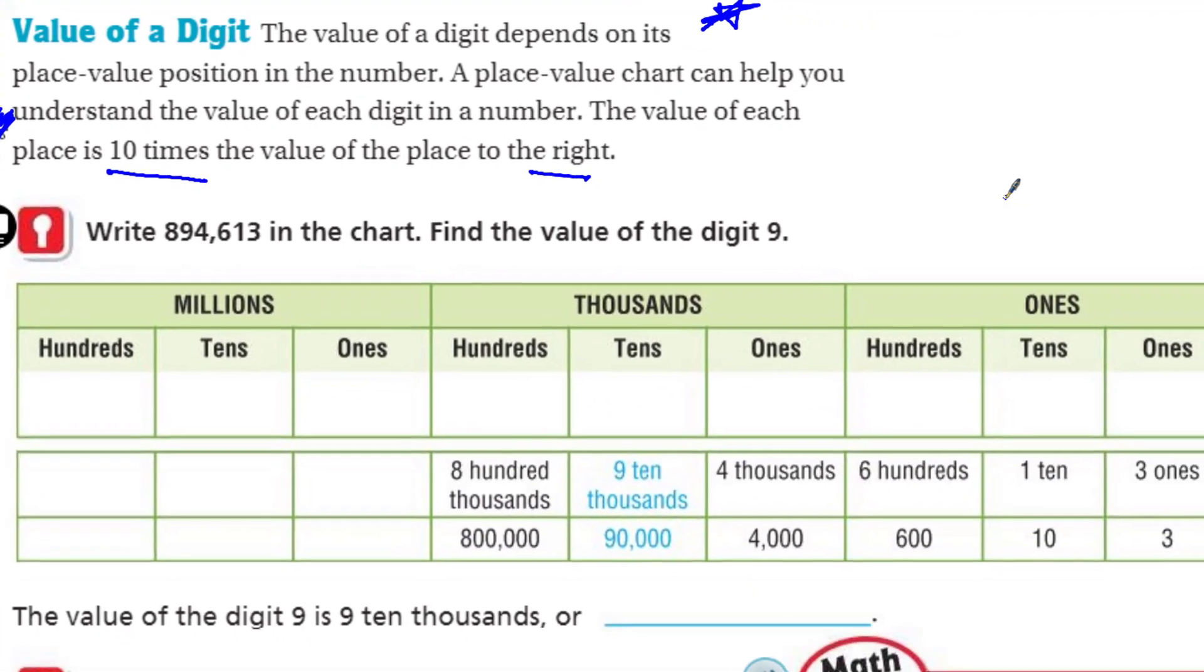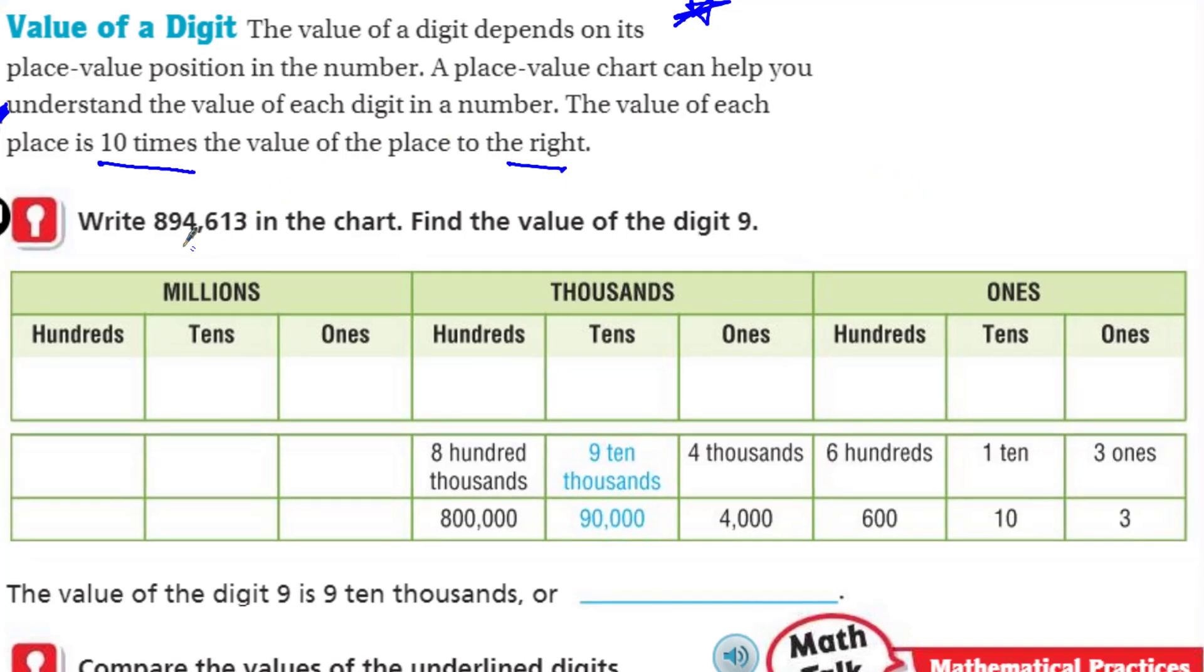Let's write that number. The ones is going to be a three, the tens is going to be a one, the hundreds is a six. Four in the thousands, nine because we're in the 10,000s here, and then the eight goes right here. There's my number.